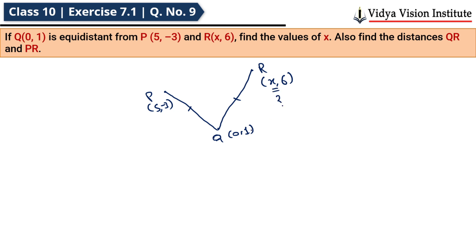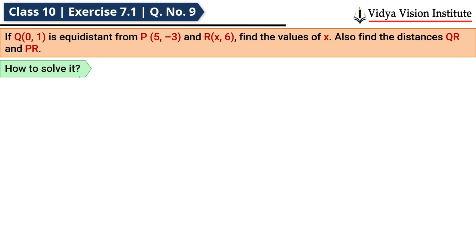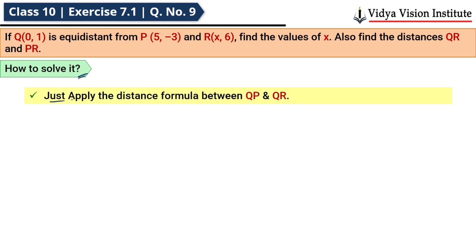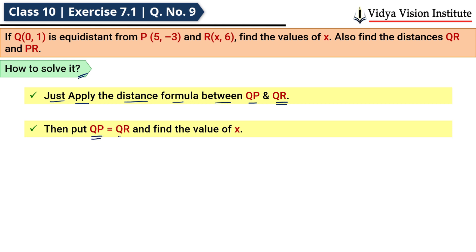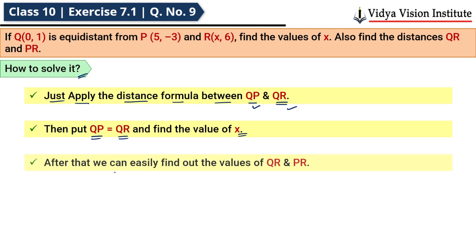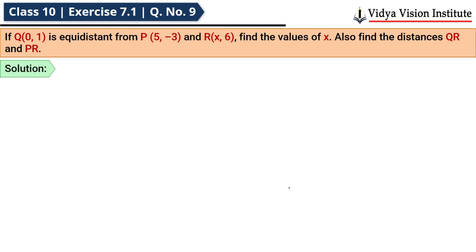Humein x ki value pata lagani hai, aur x ki value pata karne ke baad humein QR aur PR ki bhi value pata lagani hai. Isliye hum QP aur QR ke beech distance formula apply karenge, phir QP = QR set kar denge — isse humein x ki value mil jaayegi.